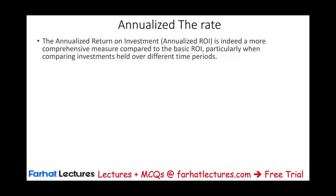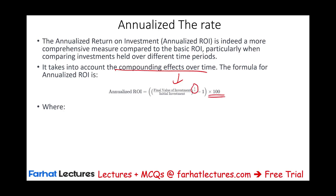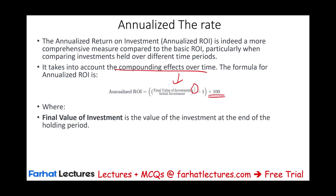If someone says they earned 40%, the next question should be: is this 40% annually, or over the entire investment period? You need to convert that total return into an annual return so you can compare performance. The formula for annualizing the return accounts for the compounding effect over time: take the final value divided by the initial investment, raise it to the power of 1 over n, then subtract 1 and multiply by 100%.